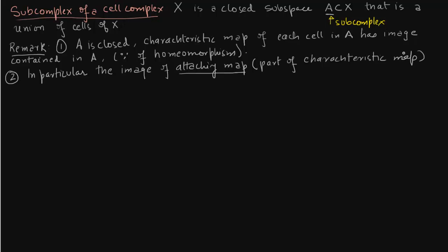But why do we need that? We need that because this attaching map makes A into a subcomplex. So A is a CW complex in its own right. That is, you can define A without referring to X as a CW complex in itself. This is important. A is a subcomplex of X but it is also a complex in its own right.